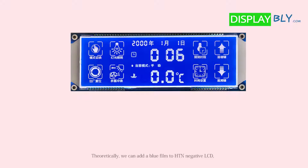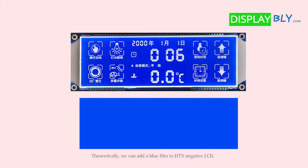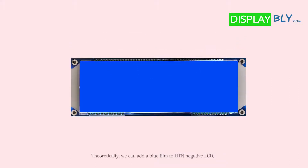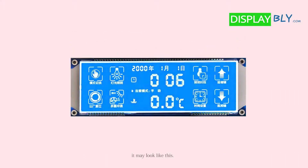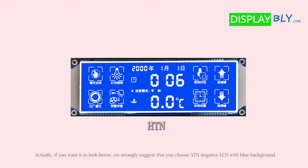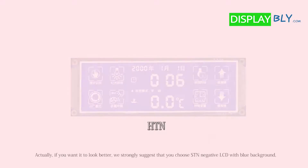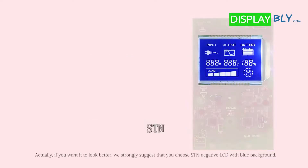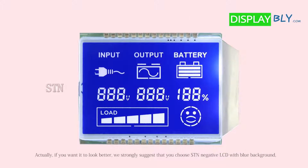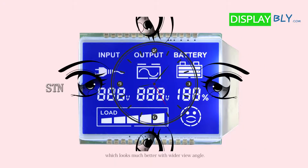Theoretically, we can add a blue film to the HTN negative LCD — it may look like this. Actually, if you want it to look better, we strongly suggest that you choose an STN negative LCD with blue background, which looks much better with a wider view angle.